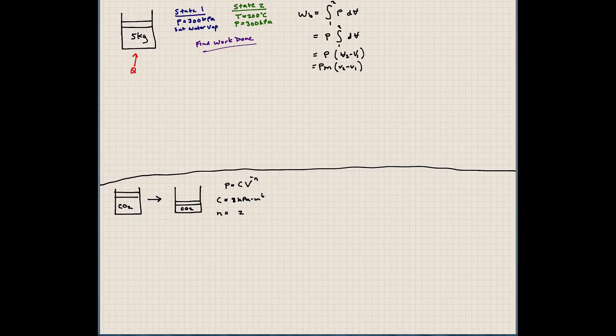So we know the mass, and the specific volumes we don't know at the two states. Let's determine what the specific volumes are for this mixture. For the first condition, we have a pressure of 300 kilopascals, and we know it's a saturated water vapor, so let's look at that.